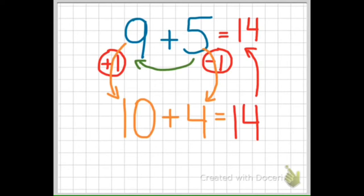Now we use the pattern of adding a 10 to a single digit number. 10 plus 4 equals 14. So then, 9 plus 5 equals 14.